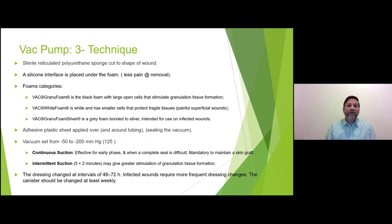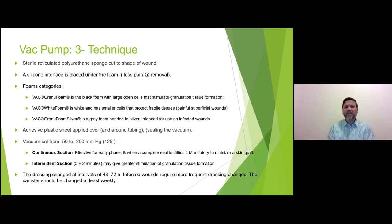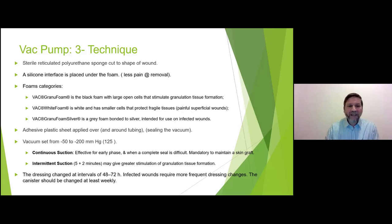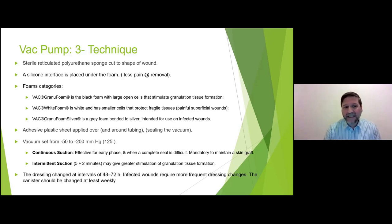How do you apply it? Use a sterile reticulated polyurethane sponge. Use a silicone interface layer to stop it adhering to the wound so removal doesn't pull away granulation tissue and doesn't cause pain. There are three foam types: black is the standard — stimulates granulation tissue for large wounds; white has smaller cells to protect fragile tissues; grey contains silver for infected wounds. Then apply an adhesive plastic sheet to seal everything including the pump tube.